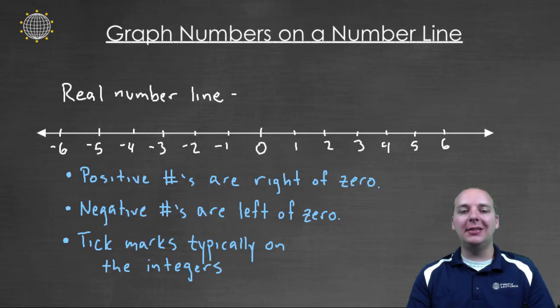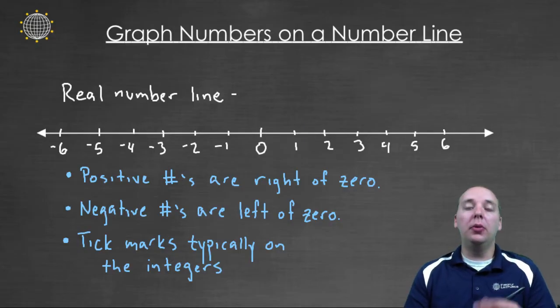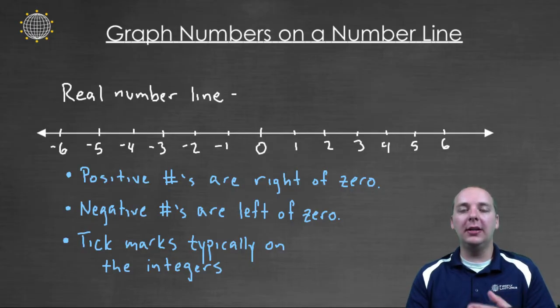And again, just to be clear, I'm not saying that these are the only numbers on the number line. There are numbers here, and here, and everywhere. The tick marks are just meant to be simply points of reference. And so if you want to plot a number on a number line, that's showing a reader where it is in relation to the other numbers on the number line.